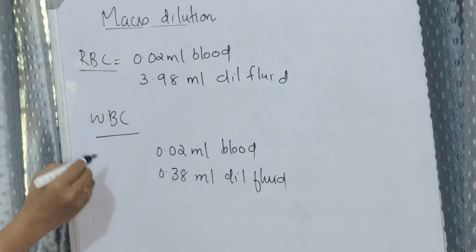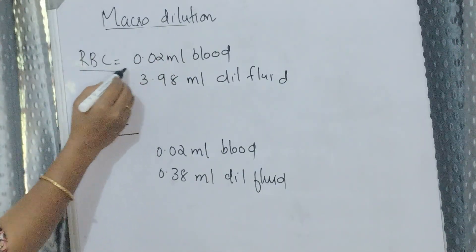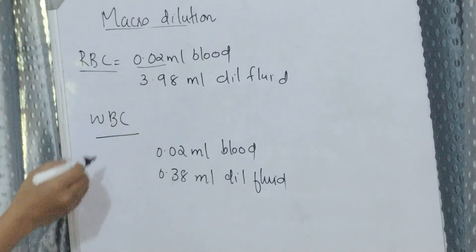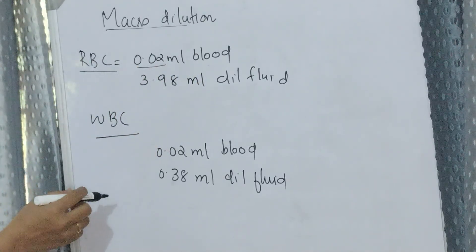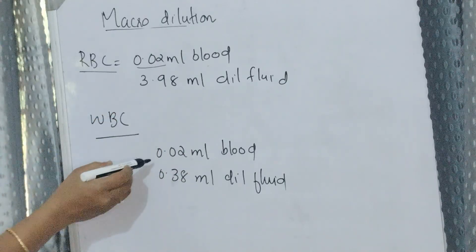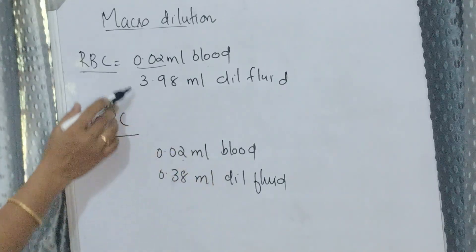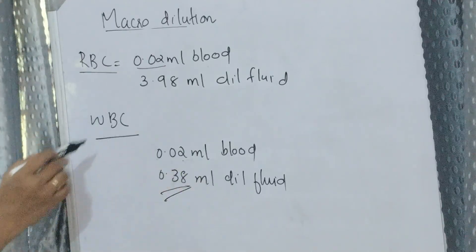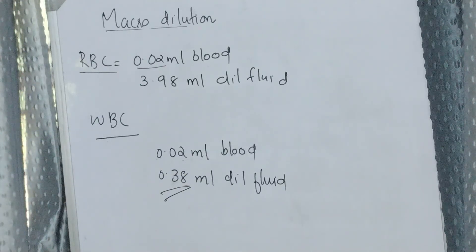Macro dilution or bulk dilution: For RBC counting, take 0.02 ml or 20 microliters blood and 3.98 ml diluting fluid. For WBC counting, take 0.02 ml or 20 microliters blood plus 0.38 ml diluting fluid.